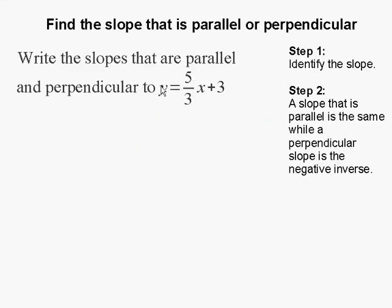Write the slope that are parallel and perpendicular to y equals 5 over 3x plus 3.